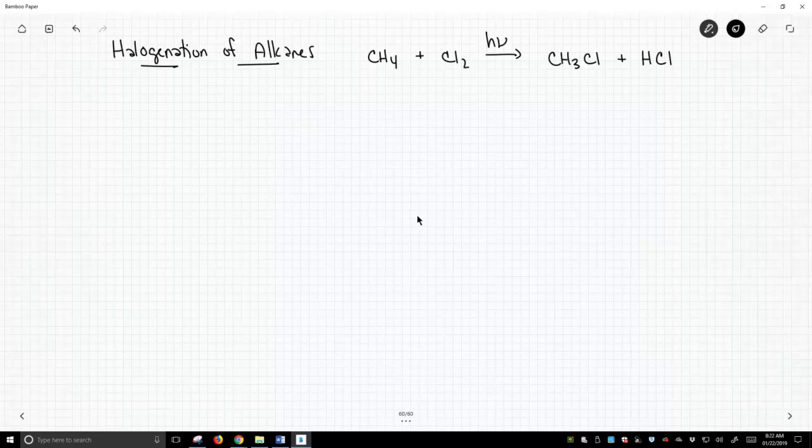We started organic chemistry off, learning a little bit of acid-base chemistry, and then going straight to reactions like the SN2 reaction, which requires an alkyl halide like chloromethane. We never answered how you make those. Well, you make them through radical halogenations, typically of alkanes.